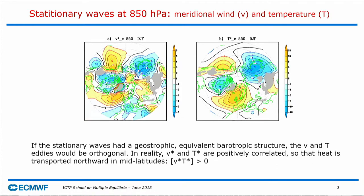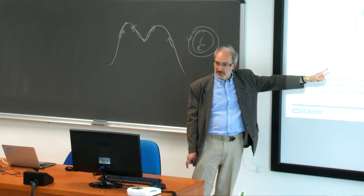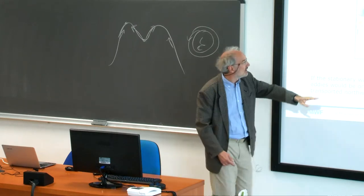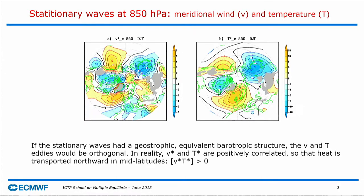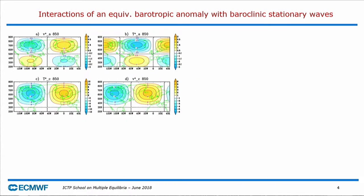So when you think about the effect of an NAO anomaly — even if the NAO anomaly is equivalent barotropic — it can still change the heat transport, because it is superimposed on the rest of the stationary waves. The NAO anomaly has a dipole in the meridional direction, while these stationary waves have a broader meridional scale with the same sign from roughly 17°N to 70°N.